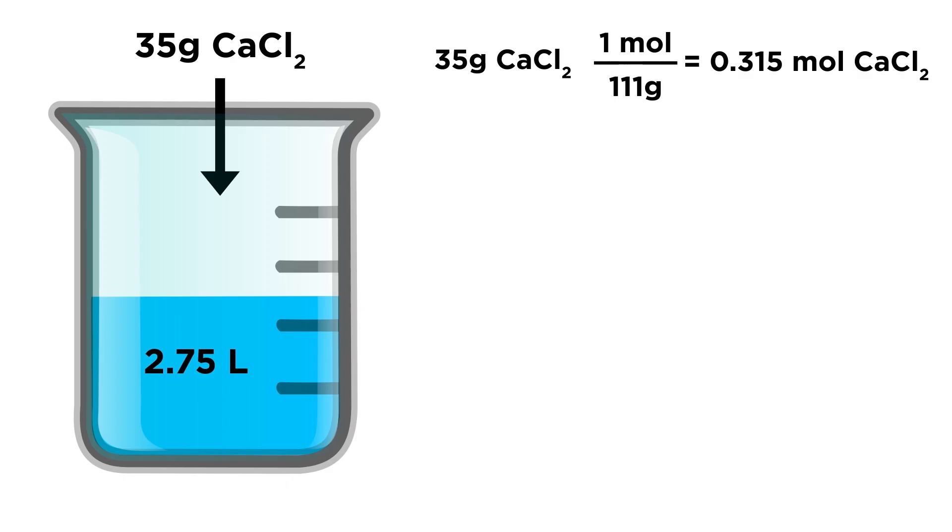Now in this case, as we can see from the subscript here, one formula unit of the salt, upon dissociation, will yield one calcium ion and two chloride ions. That means that 0.315 moles of salt will yield 0.315 moles of calcium ions, but 0.630 moles of chloride ions, since there will be twice as many chloride ions as calcium ions after dissociation.